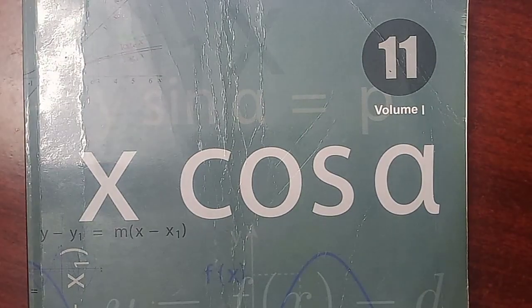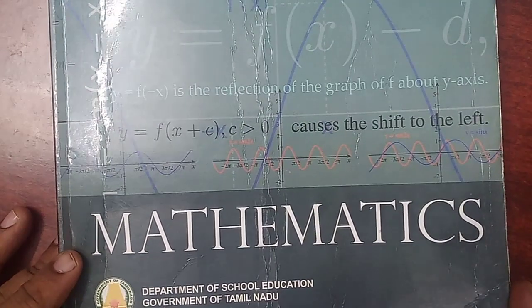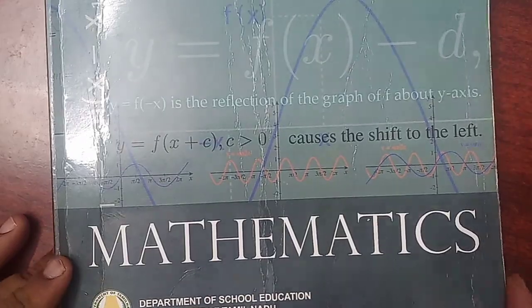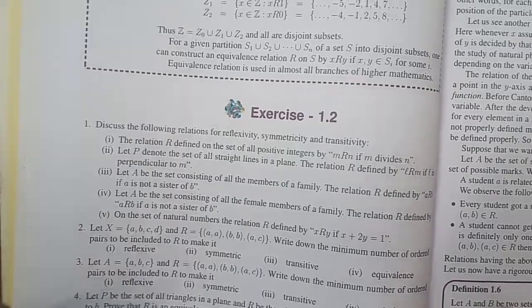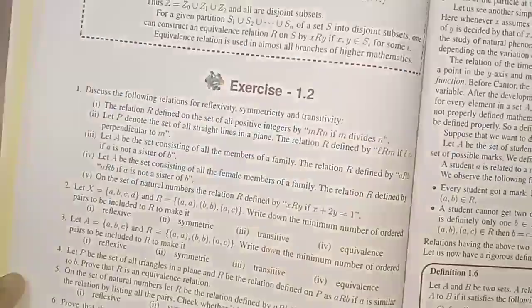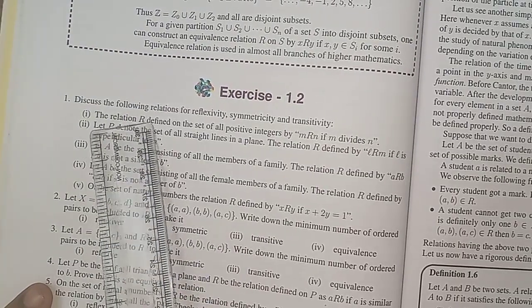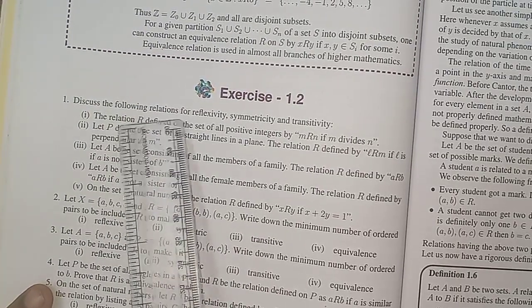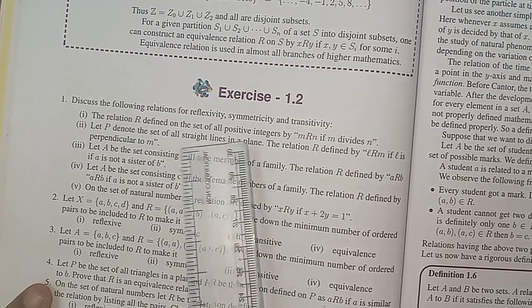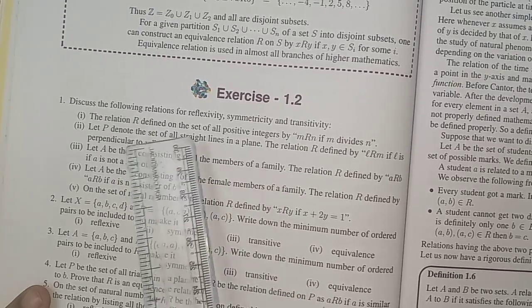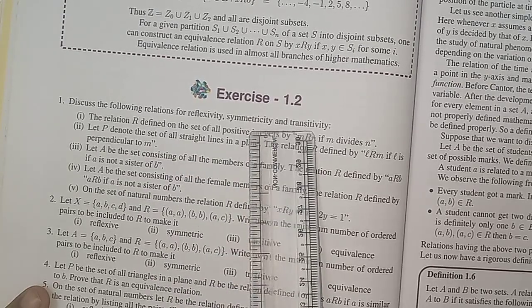Students, this is Sivakumar. 11th standard mathematics, chapter number one, exercise 1.2, problem number one, subdivision number one. Discuss the following relations for reflexivity, symmetricity, and transitivity — which means reflexive, symmetric, and transitive.